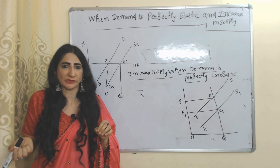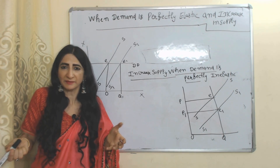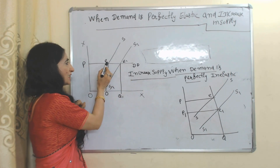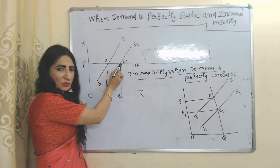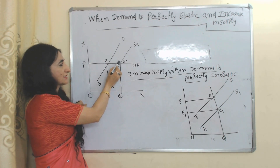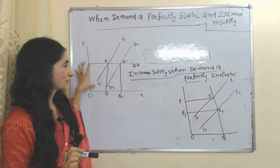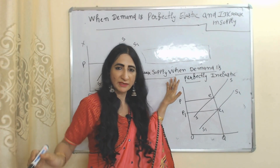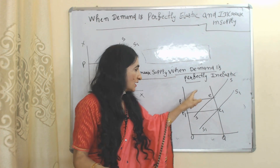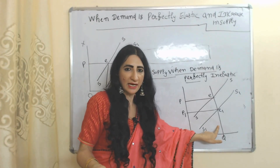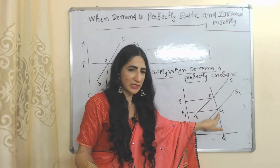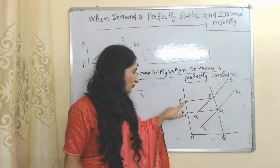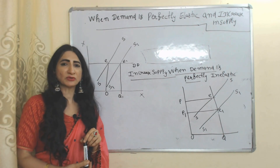This horizontal line shows perfectly elastic demand. E is the initial equilibrium point, E1 is the new equilibrium point. At this new equilibrium point, supply has increased but still prices are constant. Finally, increase in supply when demand is perfectly inelastic. When demand cannot change but supply is continuously increasing, prices will obviously reduce. This vertical line shows perfectly inelastic demand. E is the initial equilibrium point, E1 is the new equilibrium point. As supply increases, price reduces from P to P1. So this is all about market equilibrium — thank you so much for watching.